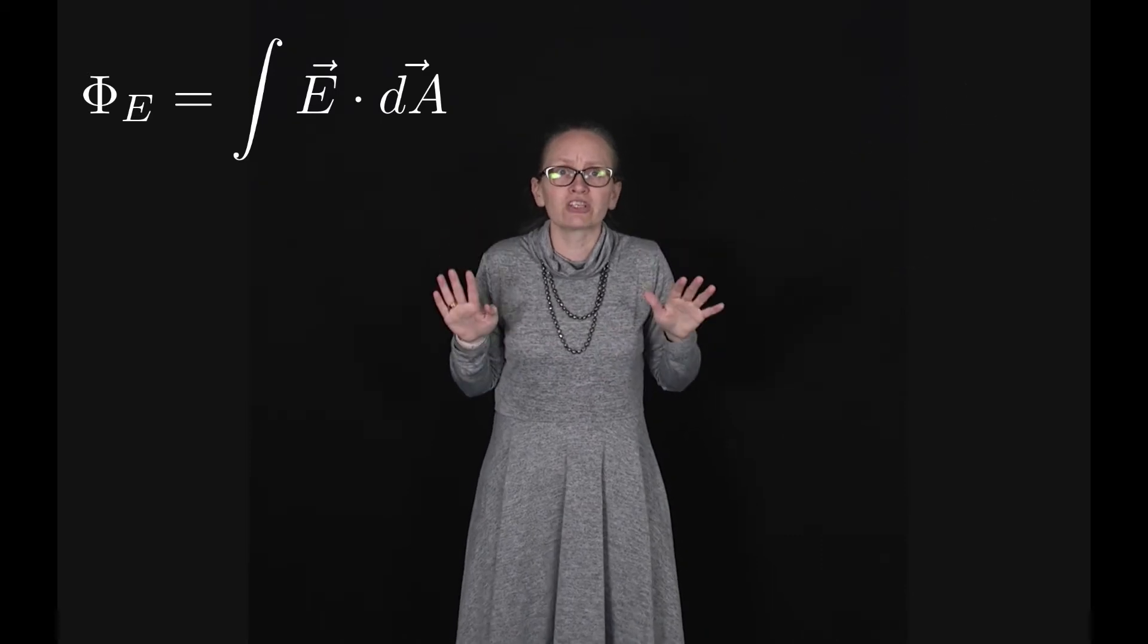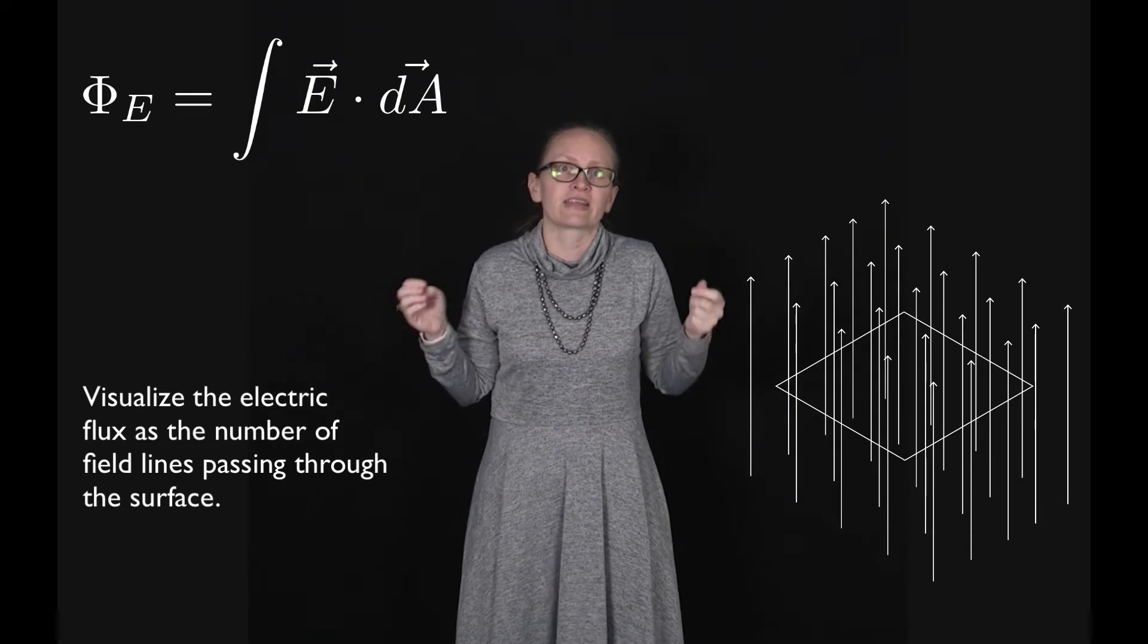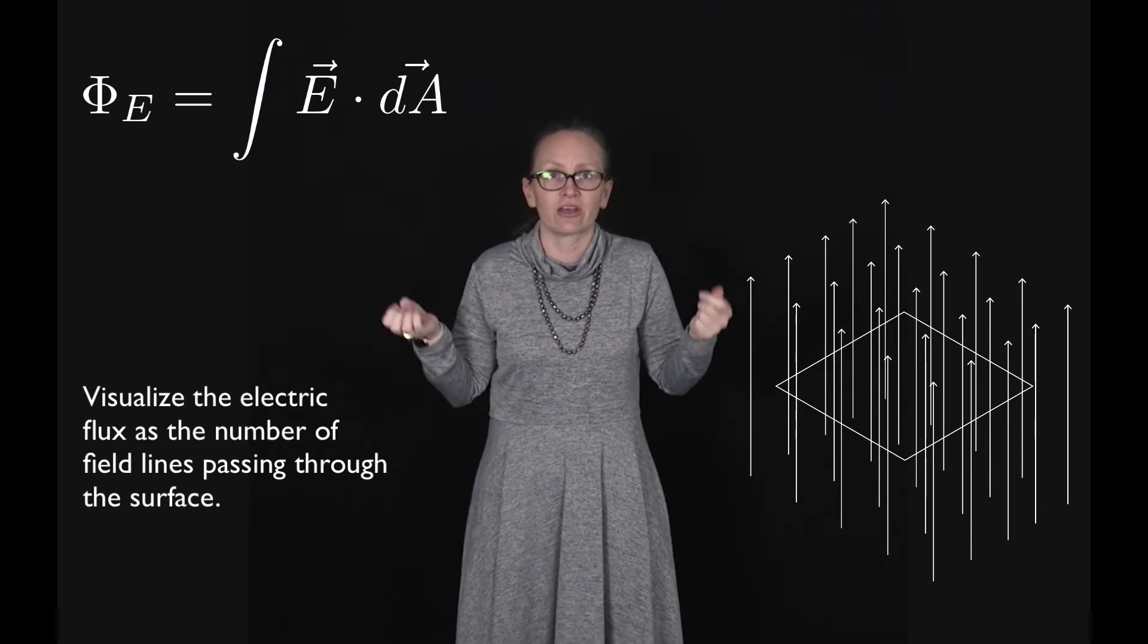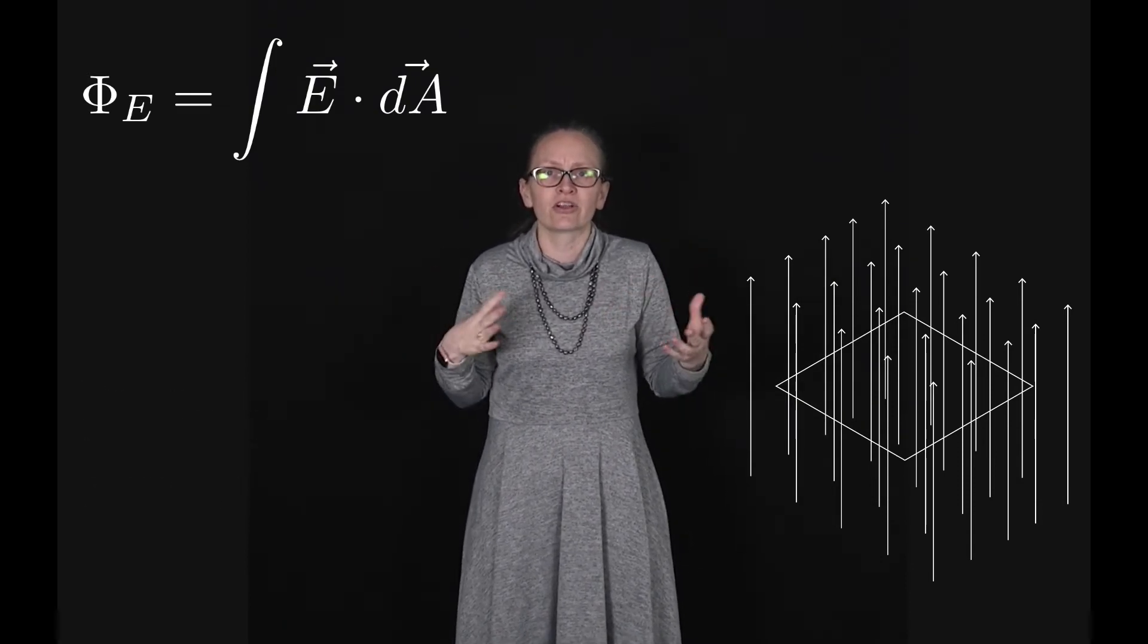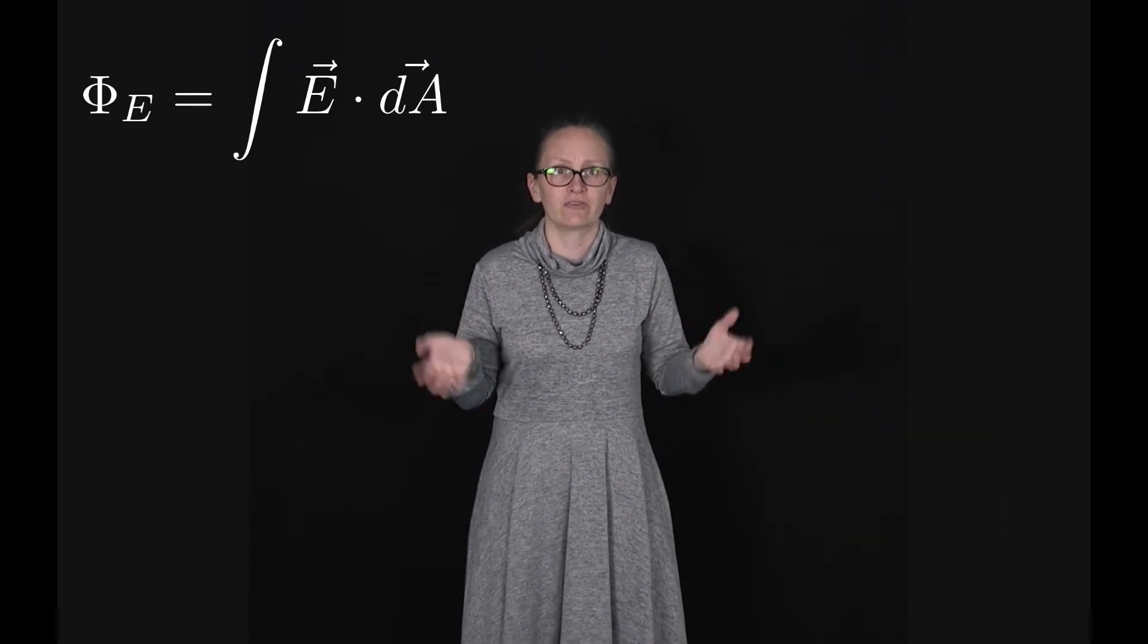So we can visualize the electric flux as the number of field lines that are passing through a surface. This is going to depend on several things. One of these things that it will depend on is the electric field strength.